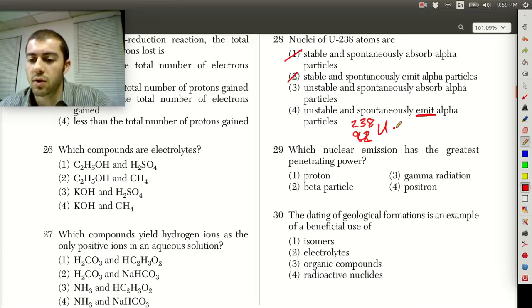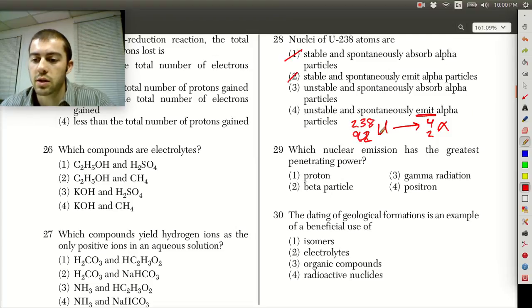So when this undergoes alpha decay, what's going to happen is it's going to basically kick off an alpha particle. The alpha particle just gets kicked off here, and then what's going to be left is whatever makes this equation add up mass-wise and charge-wise. So if we have 4 plus something has to give us 238, then this would end up being 234. And then 92 has to be 2 plus something, that would be 90.